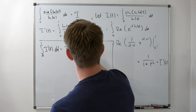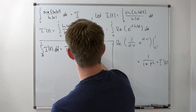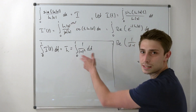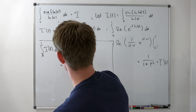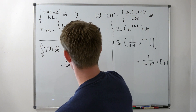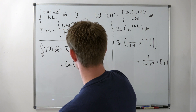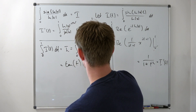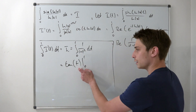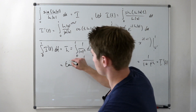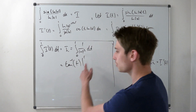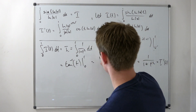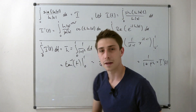This is exactly the inverse tangent. So this is arctan(t) from 0 to 1. Arctan(0) is just 0 and arctan(1) evaluates to π over 4.